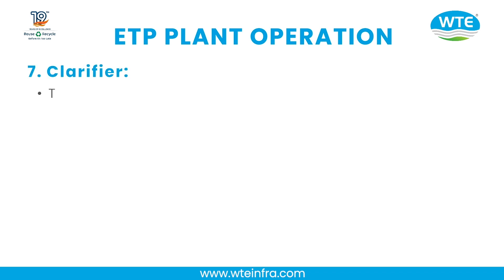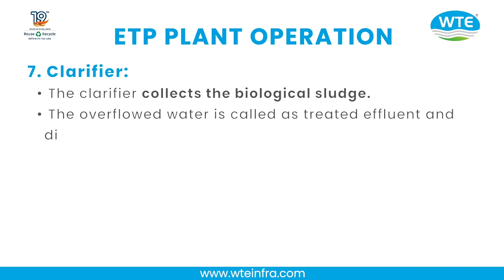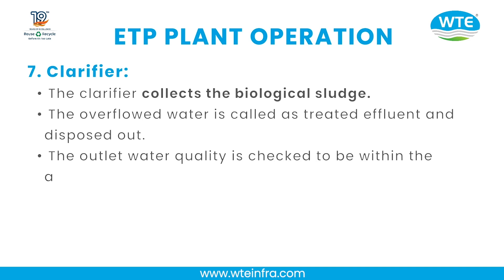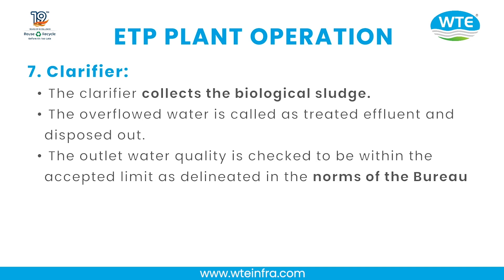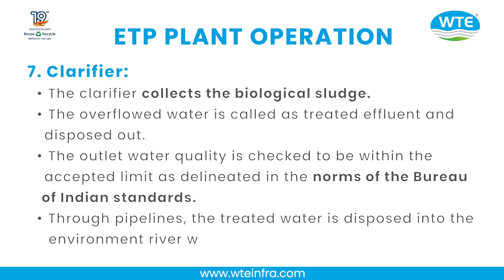Step 7 — Clarifier: The clarifier collects the biological sludge. The overflowed water is the treated effluent and is disposed out. Outlet water quality is checked to be within accepted limits as defined by the Bureau of Indian Standards. Through pipelines, the treated water is disposed into the environment — river water, barren land, etc.